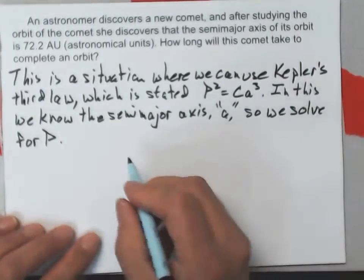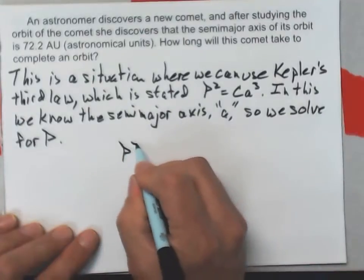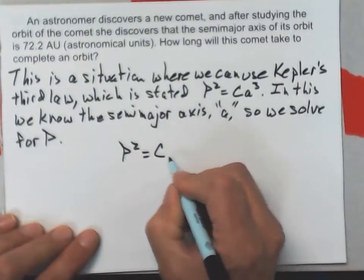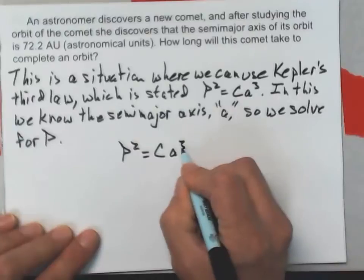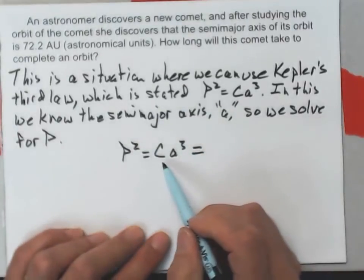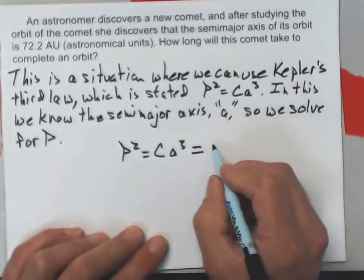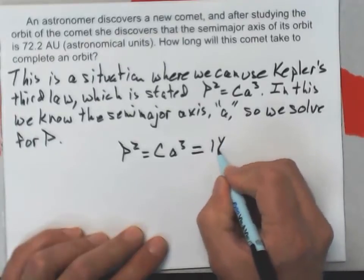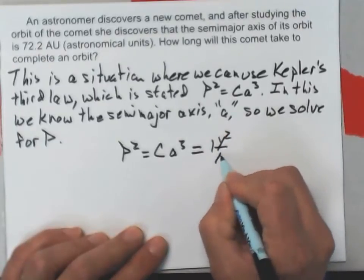Then I would write down the equation P squared equals CA cubed, which equals... I happen to know that the value of C is one year squared per AU cubed.